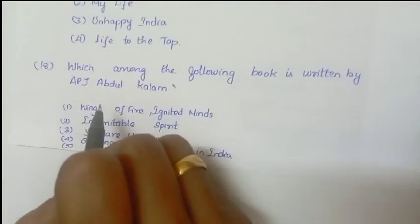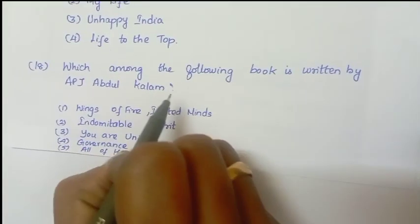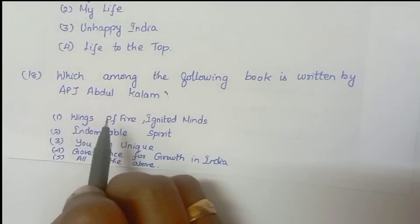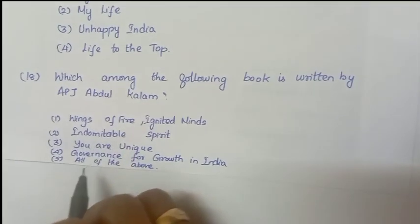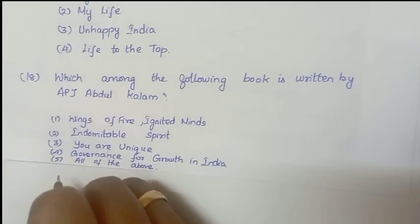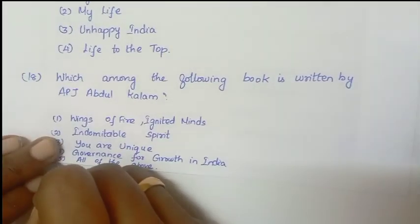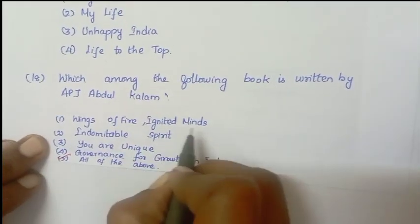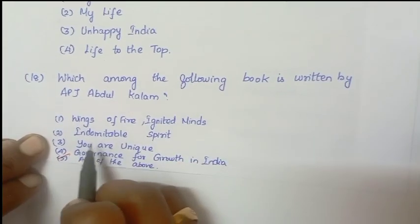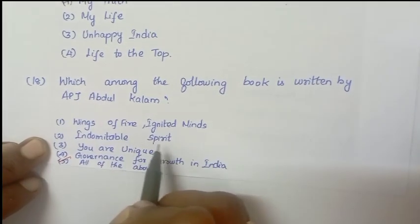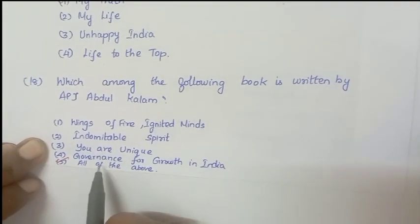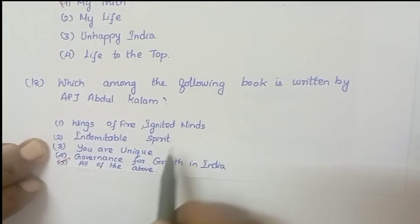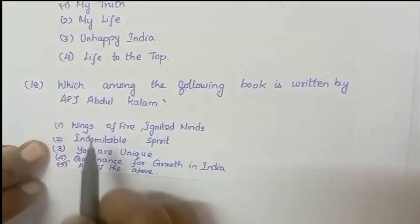Next question: Which among the following books is written by A.P.J. Abdul Kalam? Answer is all of the above — Wings of Fire, Ignited Minds, Indomitable Spirit, You Are Unique, and Governance for Growth in India.